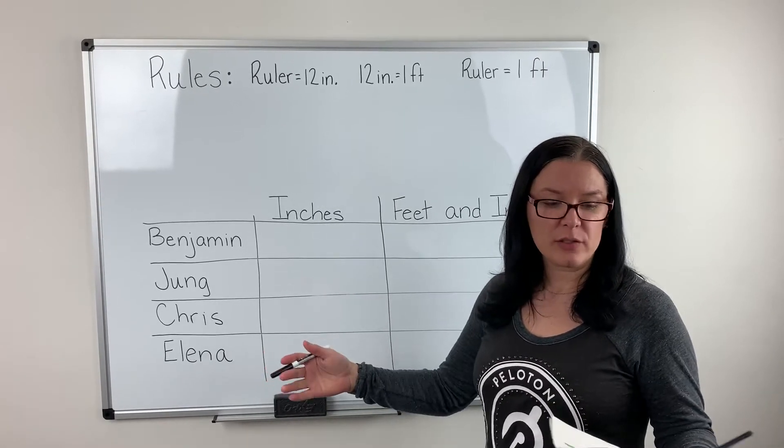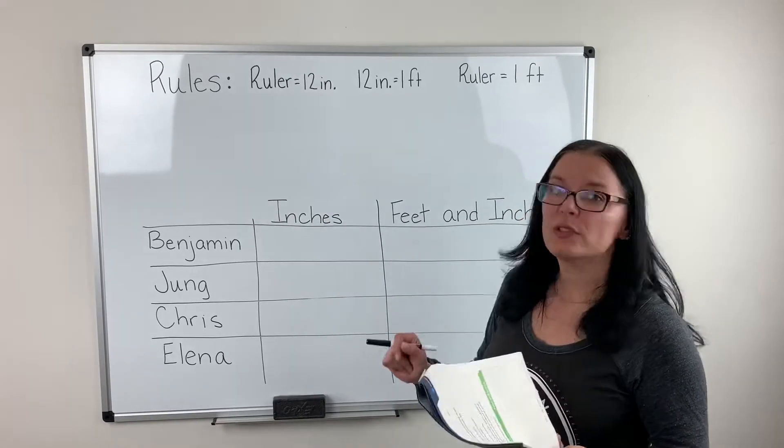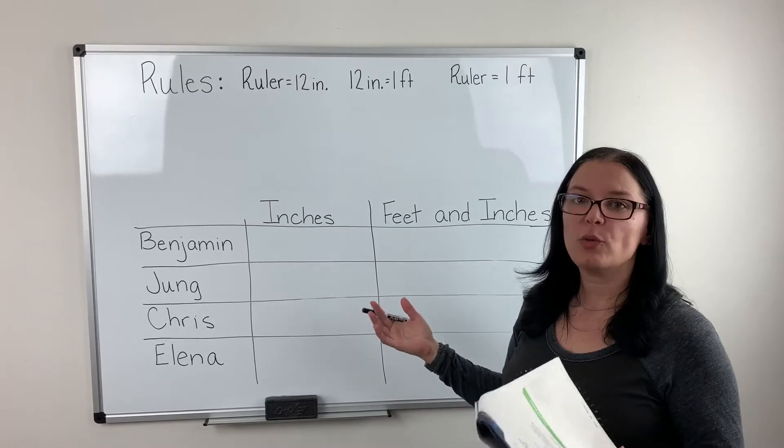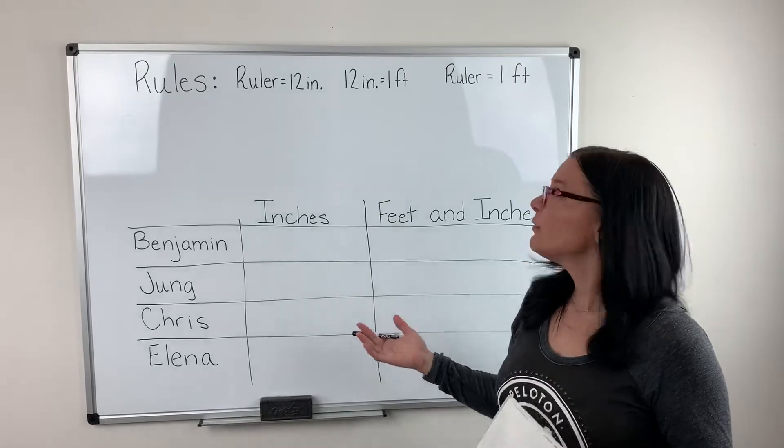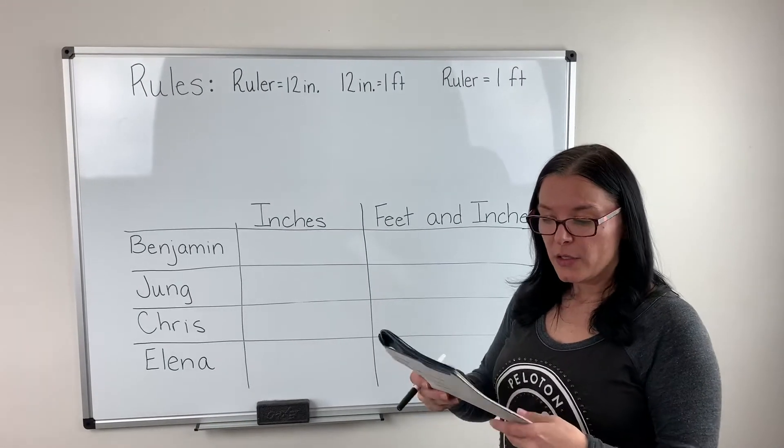We're going to look at Benjamin again using our same rules. The ruler is 12 inches. 12 inches equals one foot, therefore one ruler equals one foot.